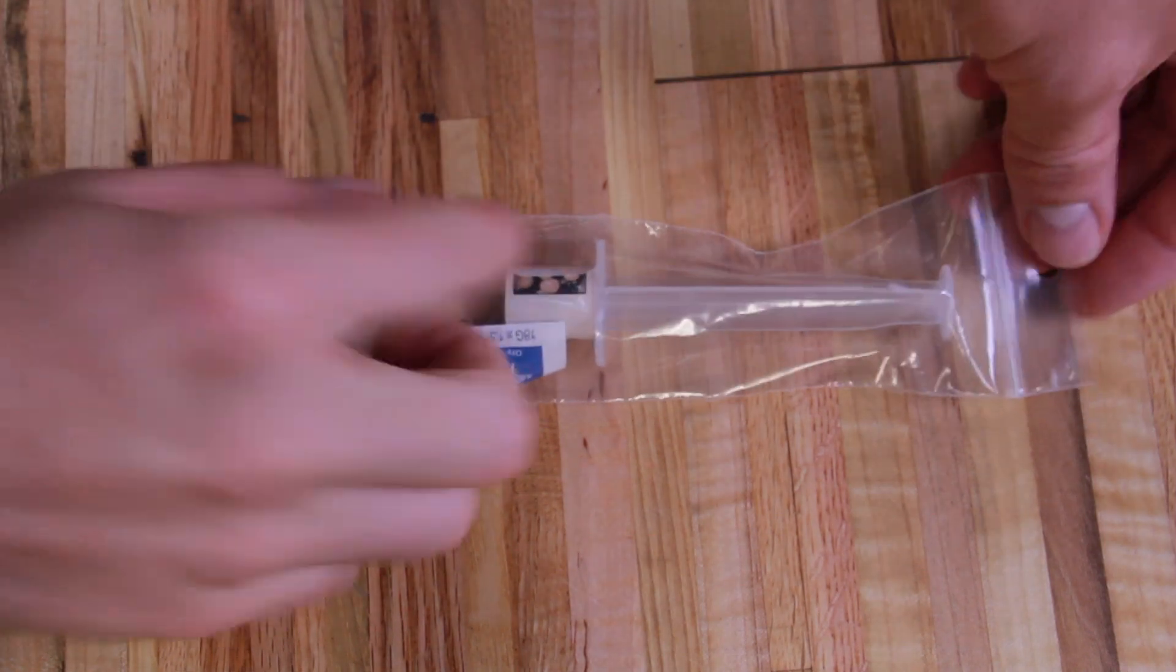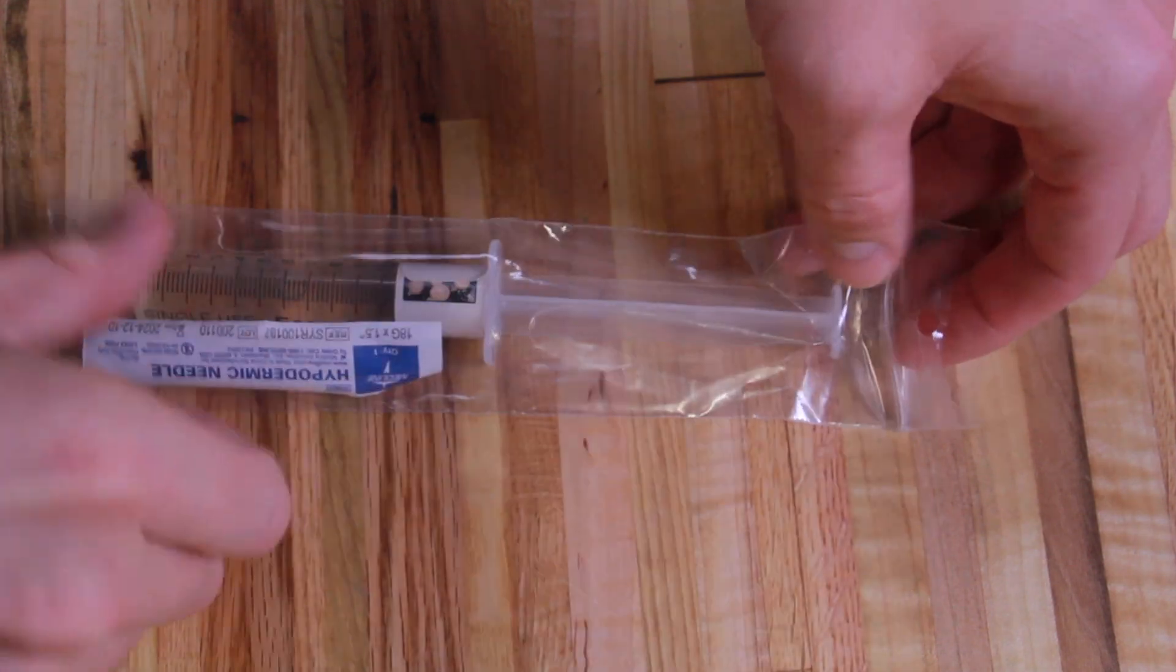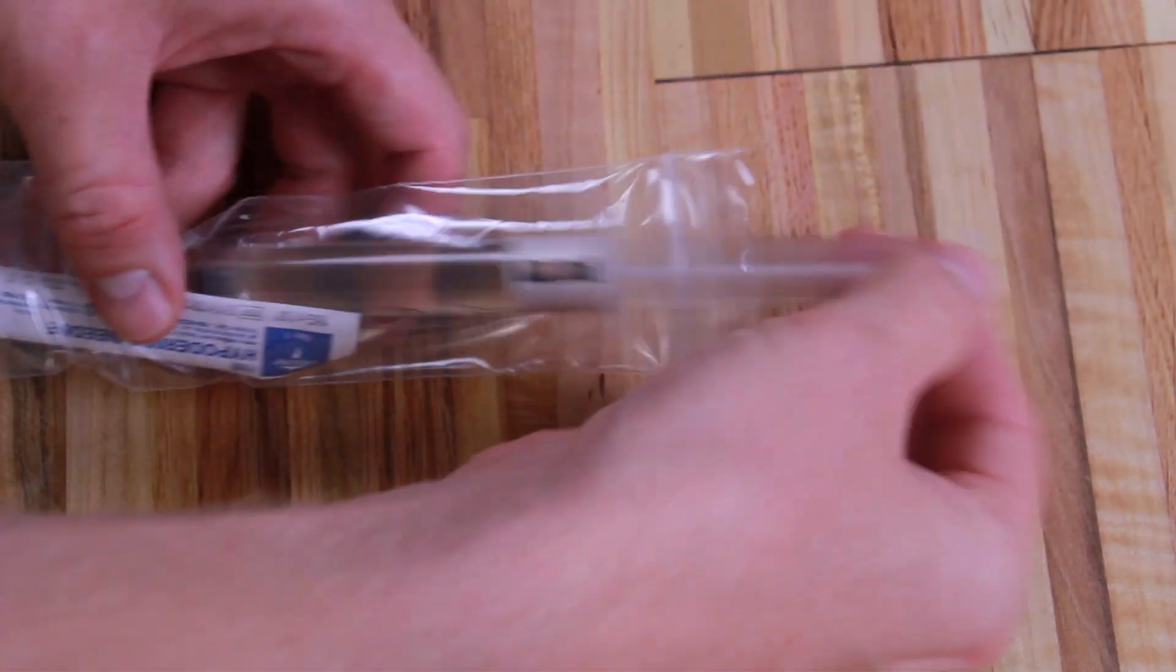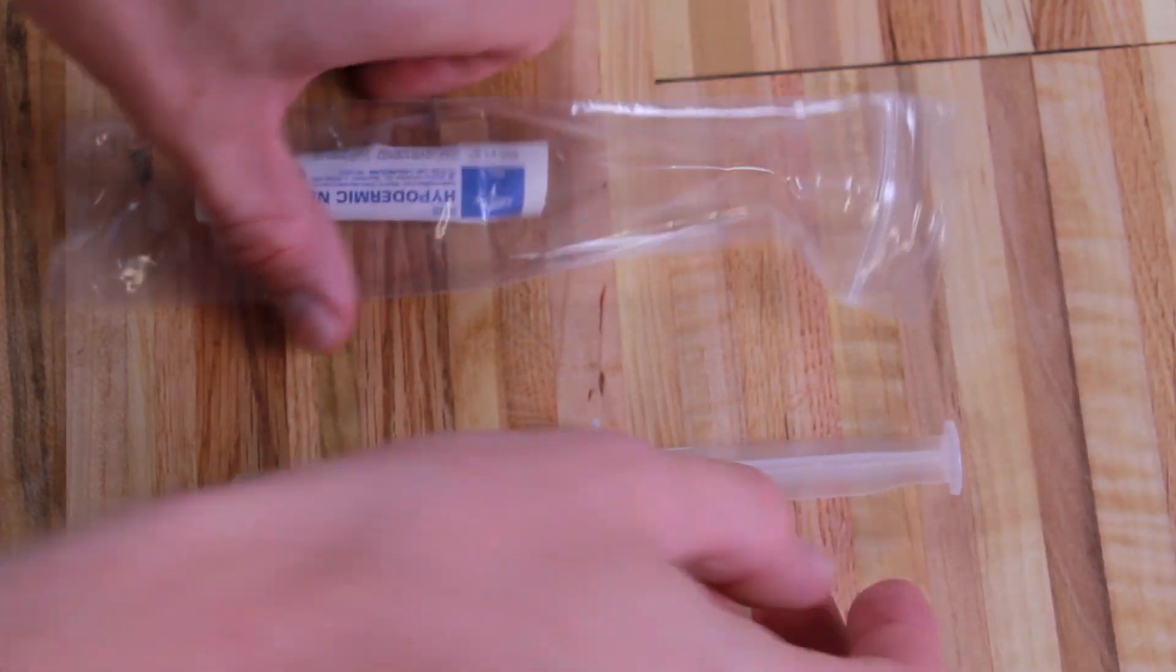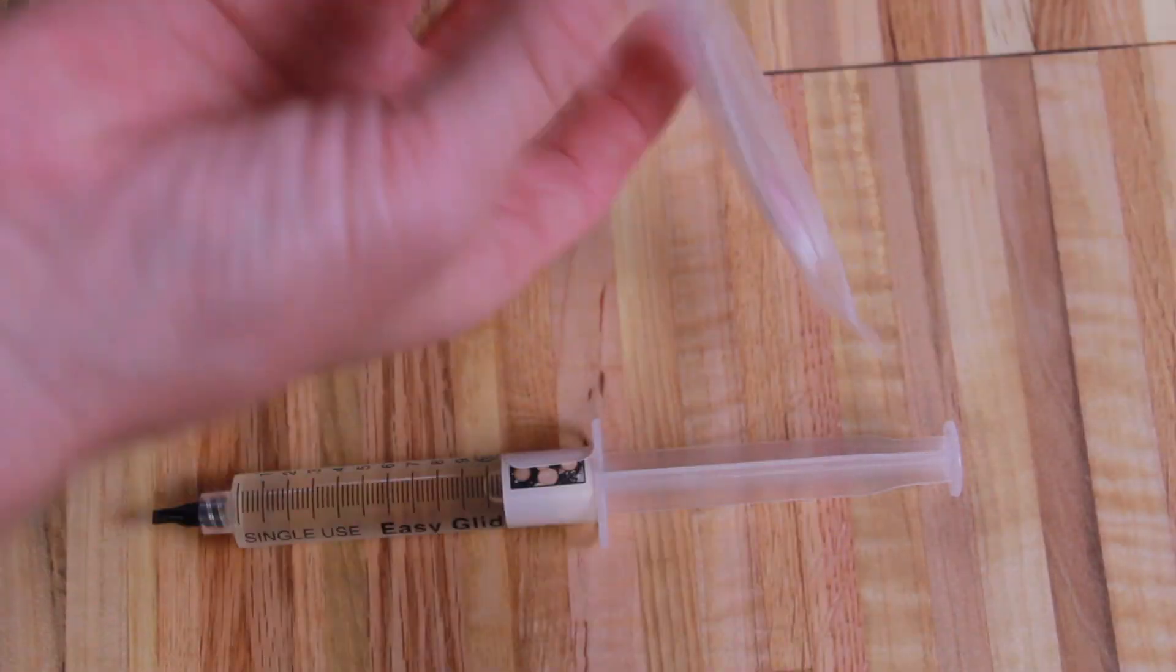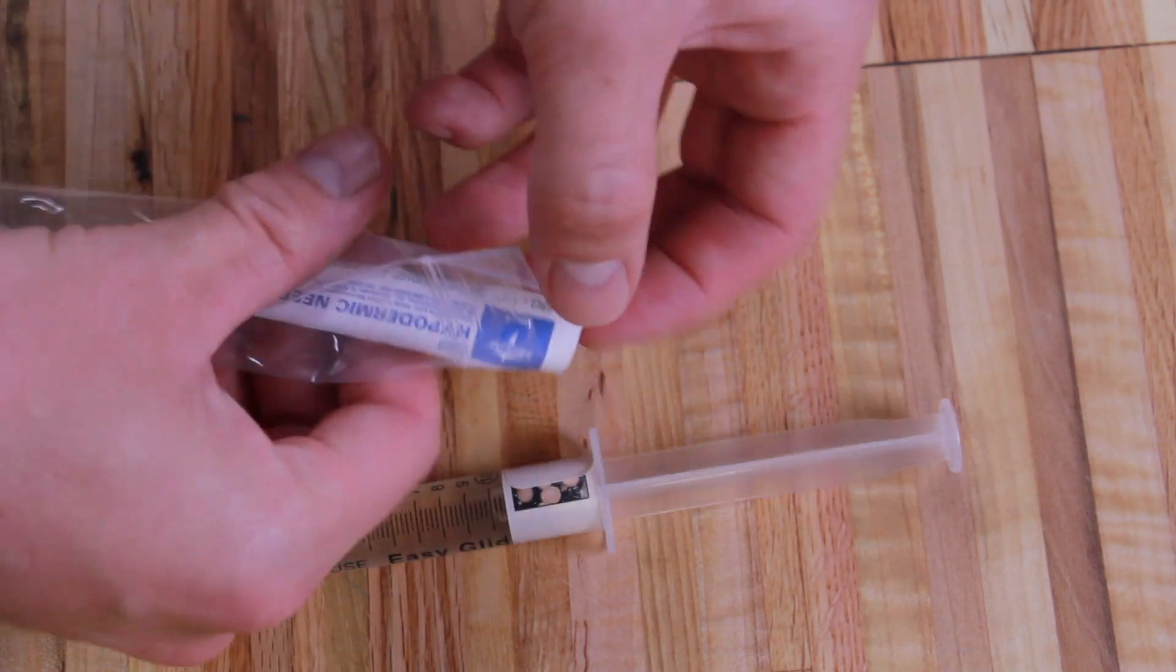When you get your liquid culture it's usually going to come in a little plastic bag like this. You'll have one syringe that has about 12 cc's of liquid culture in it and a hypodermic needle. These are usually all sealed up so they're nice and sanitary.